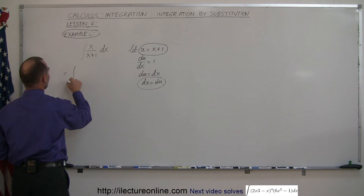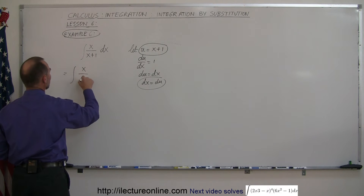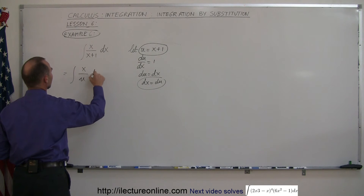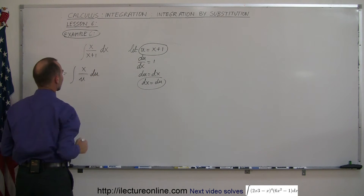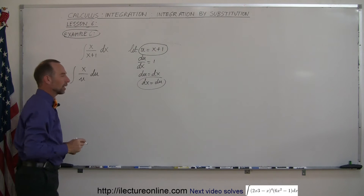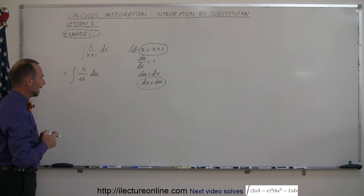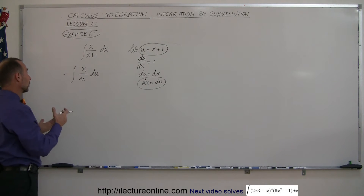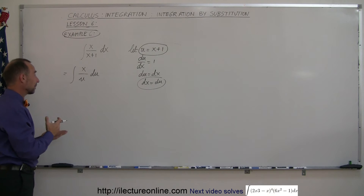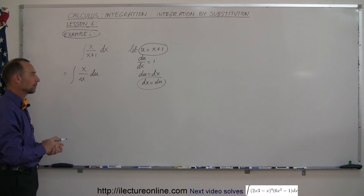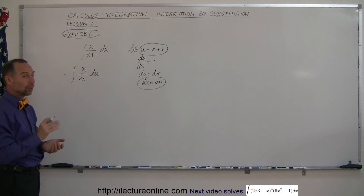This is equal to the integral of x divided by u, and instead of dx we write du. Now, you look at that and think: I'm in trouble. I can't integrate that — I can't have more than one variable inside my integral sign.